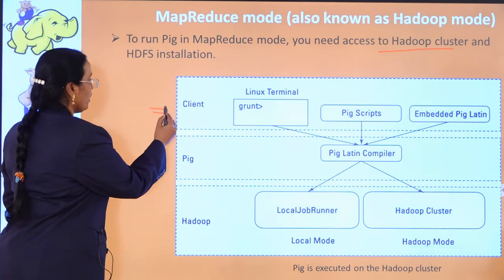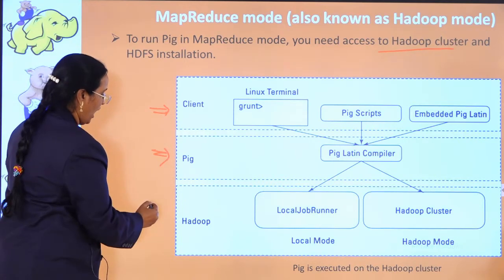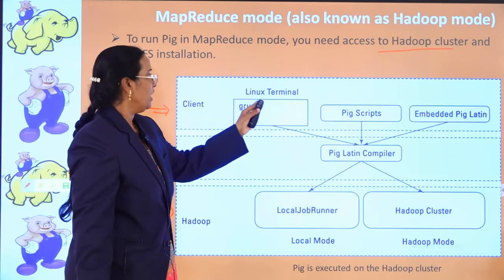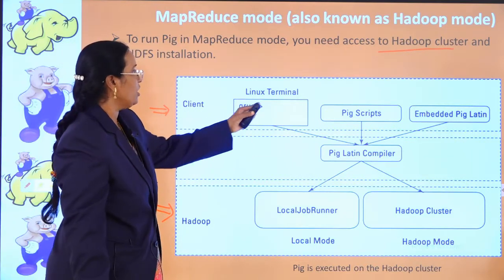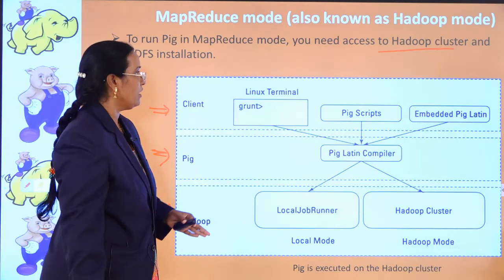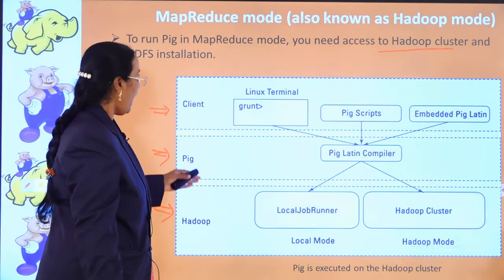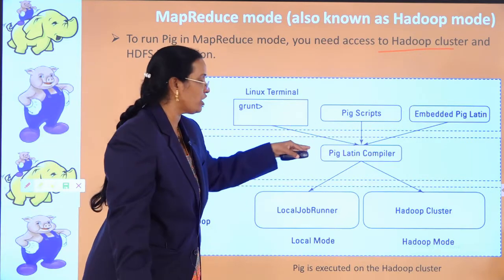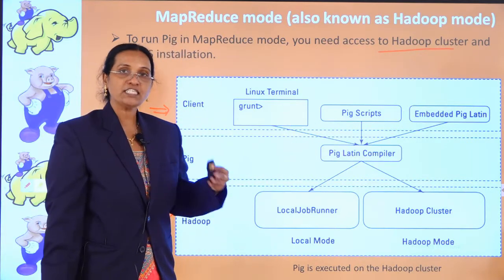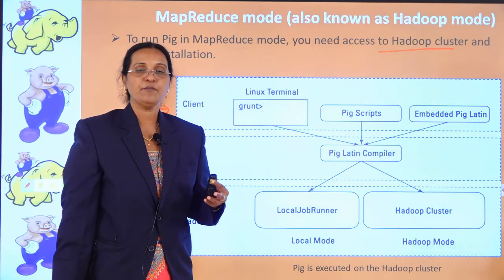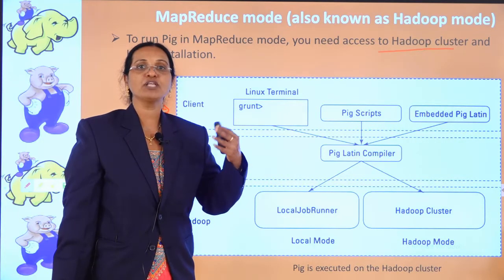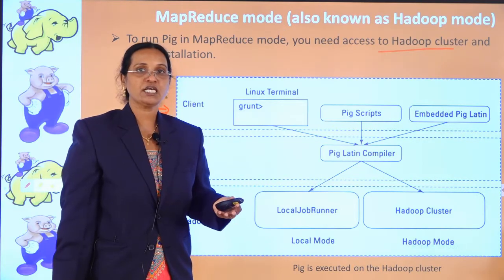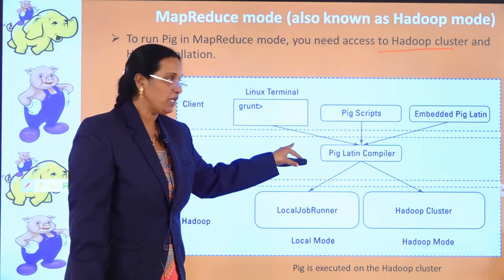The client can make use of Linux terminals, grunt, Pig scripts, or embedded Pig Latin commands. Whenever you write these Pig scripts or grunt commands, they go into the Pig Latin compiler. As we learned in previous sessions on Pig architecture, the compilers, parsers, and execution engines all work at this stage.